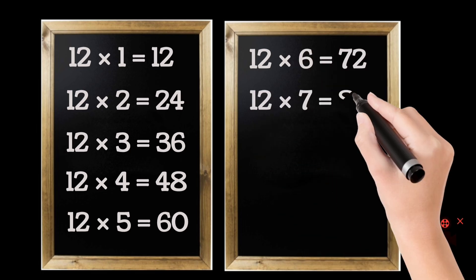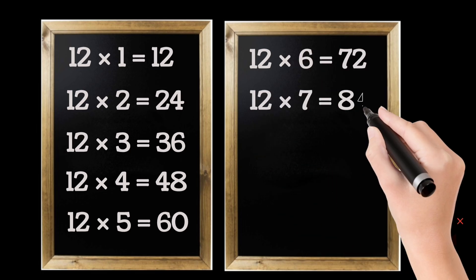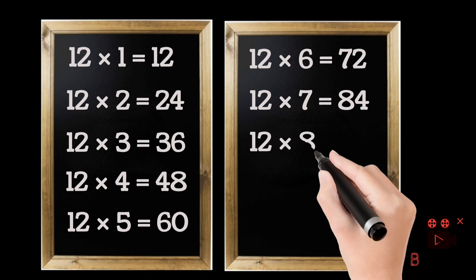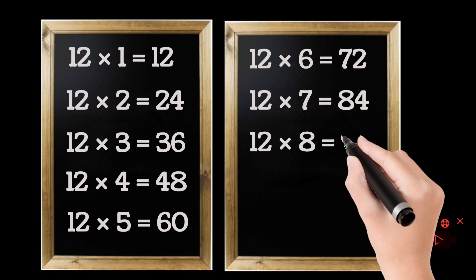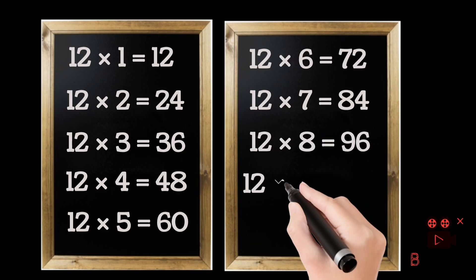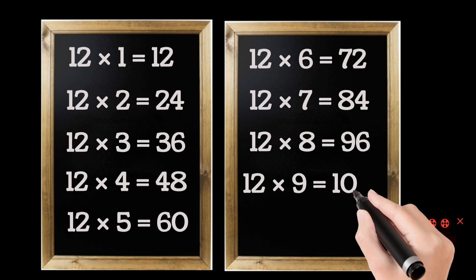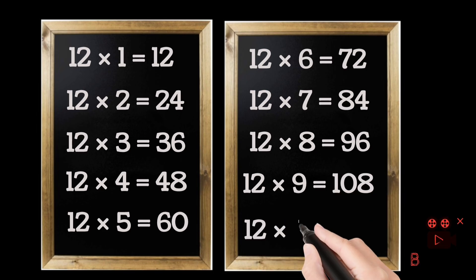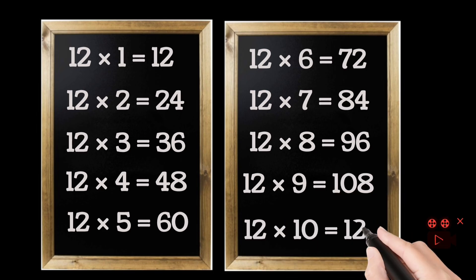12 sevens are 84. 12 eights are 96. 12 nines are 108. 12 tens are 120.